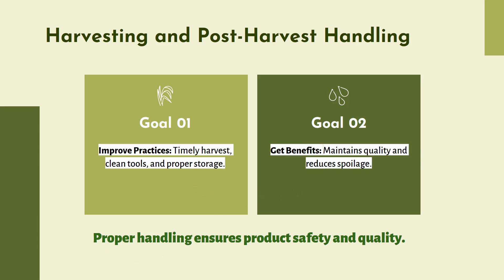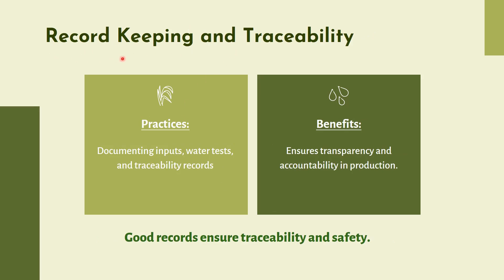Another most important stage is record keeping and traceability. Traceability is where you can recall the product if a batch is spoiled or causing severe allergies to consumers. The practices involve documenting inputs, water tests and traceability records — meaning from the first stage to the last stage, till we are providing food to consumers, all records including batch numbers and vendor data should be maintained. This ensures transparency and accountability in production. Good records ensure traceability and safety.